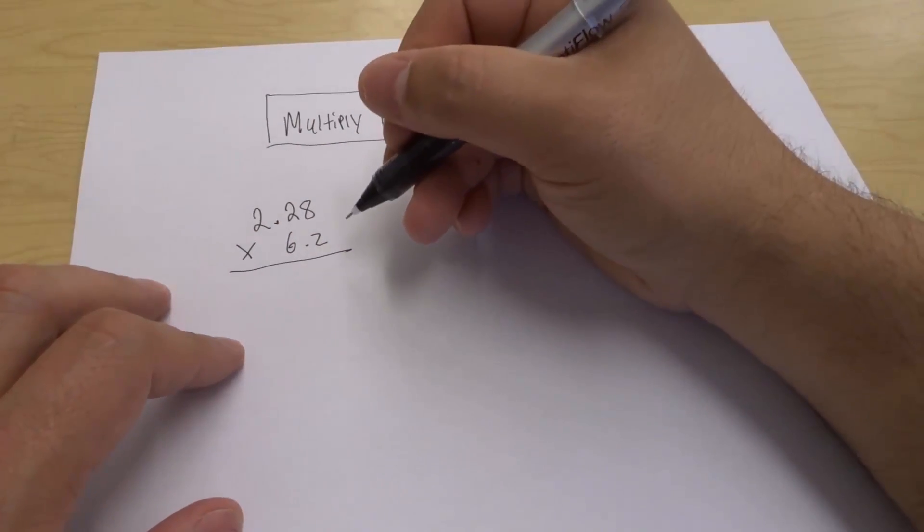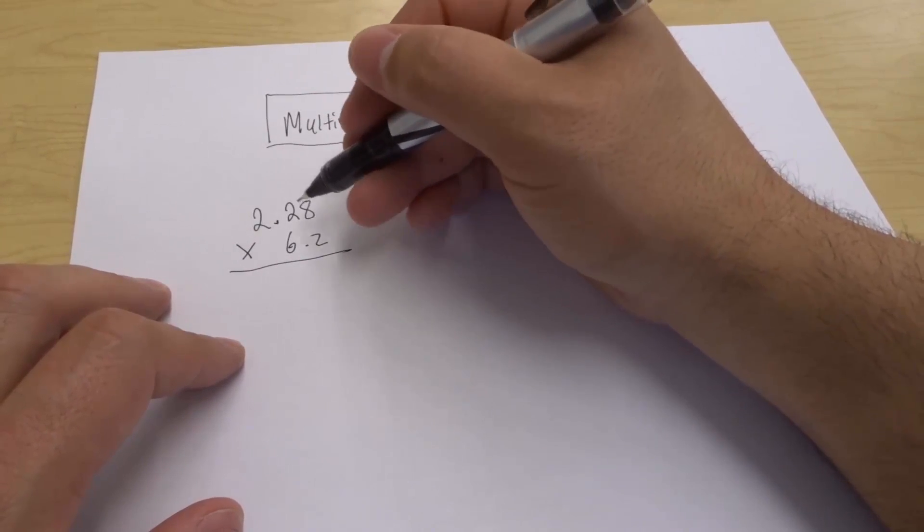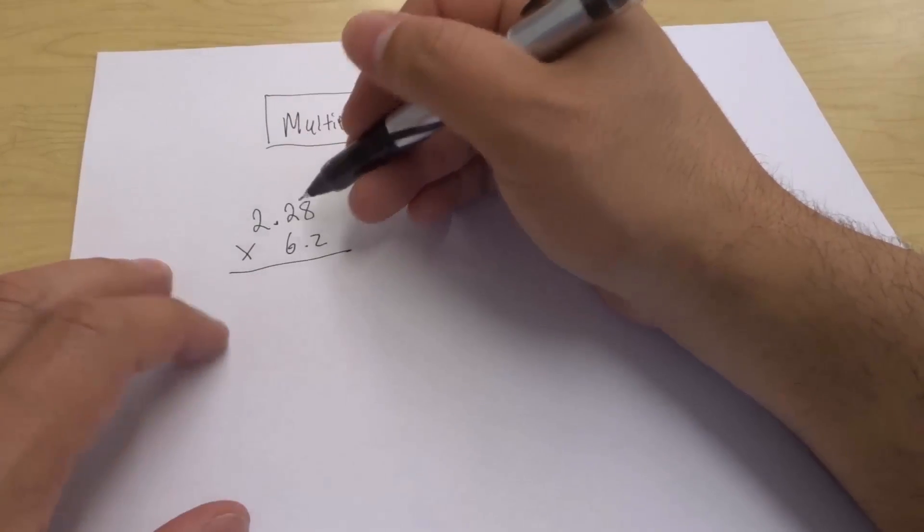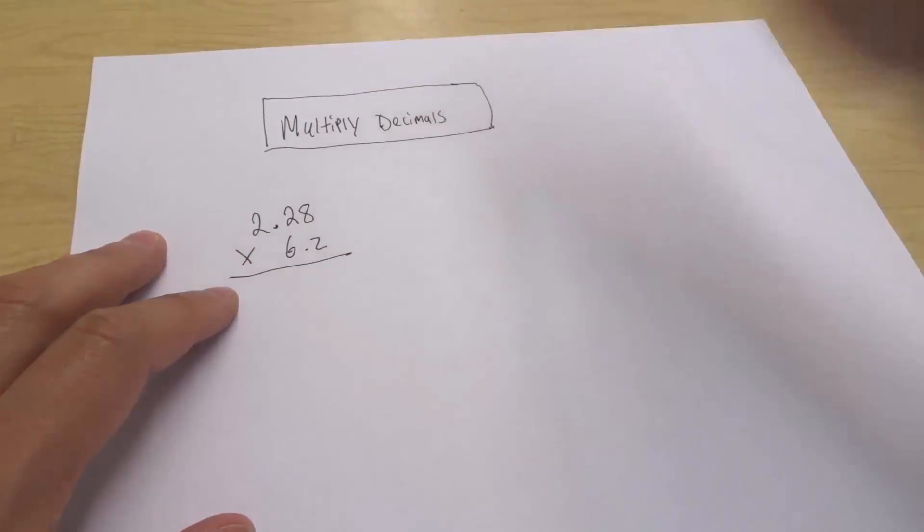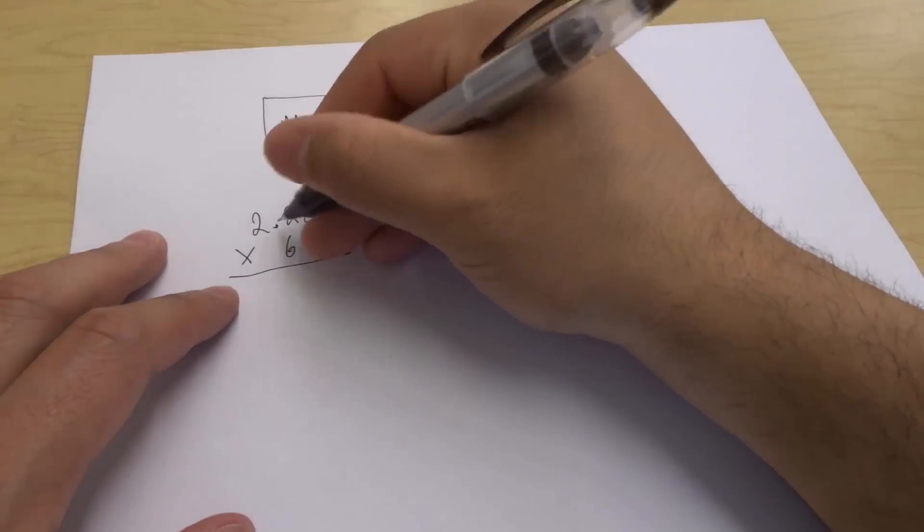Now the strategy is actually fairly simple. You want to start off by multiplying those numbers as if there were no decimals in them. Take these decimals and just imagine that they're not there. We're going to multiply the numbers without the decimals.